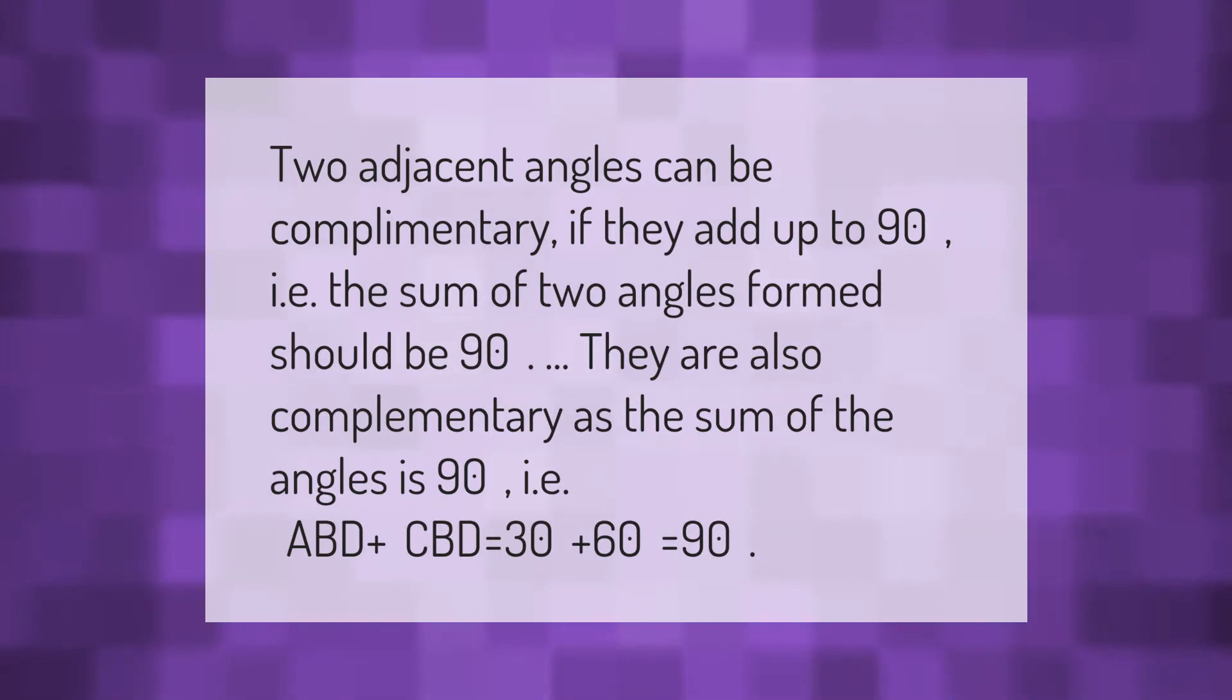Two adjacent angles can be complementary if they add up to 90, i.e., the sum of two angles formed should be 90. They are also complementary as the sum of the angles is 90, i.e., ABD + CBD = 30 + 60 = 90.